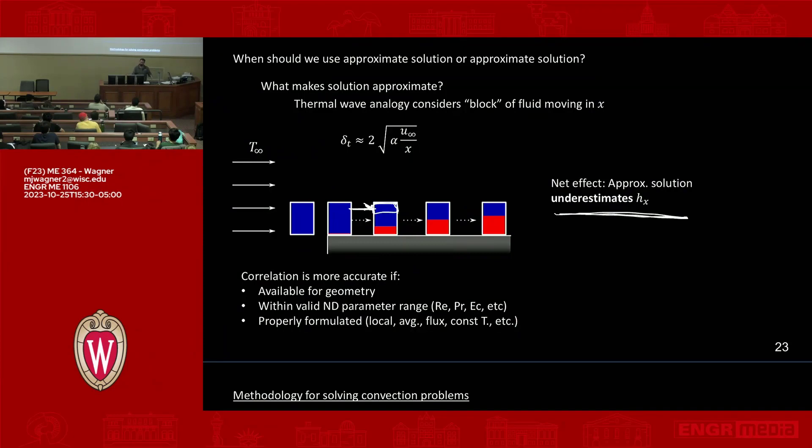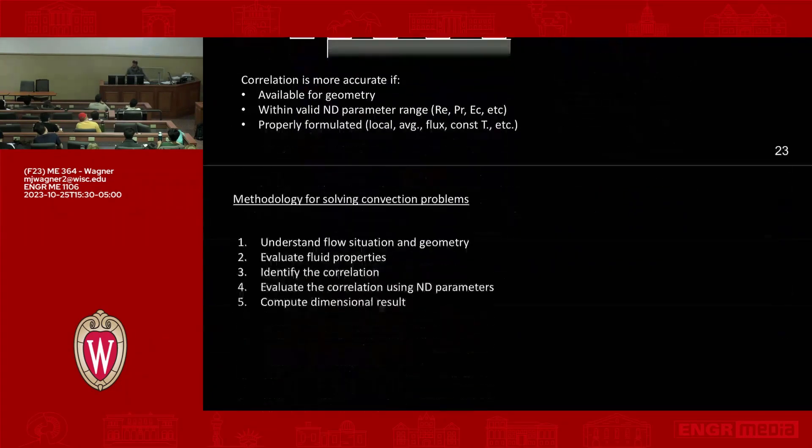You sit down and look at what's available in terms of correlations, and then you have to make a judgment. Am I better using a correlation, or am I better using an approximate model? Almost always, hopefully at least in this class, you should be more accurate using correlations that are already available. As you get into real practice, it might change.